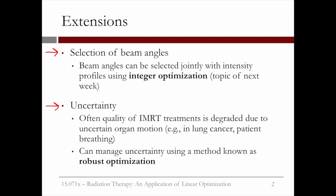Another extension is accounting for uncertainty. Often, the quality of IMRT treatments is degraded due to uncertain organ motion. For example, in lung cancer, the target area is around the lungs. But since the patient is breathing throughout the treatment, the target area is moving and the location is slightly uncertain. We can manage this uncertainty using a method known as robust optimization. There is a significant amount of literature on this method and its application to radiation therapy.